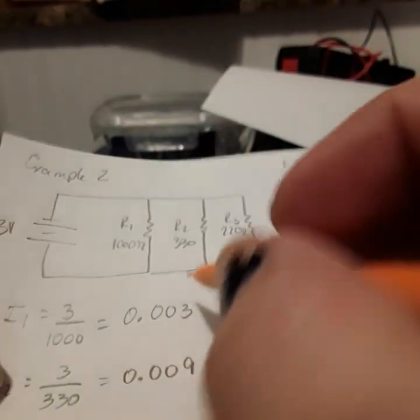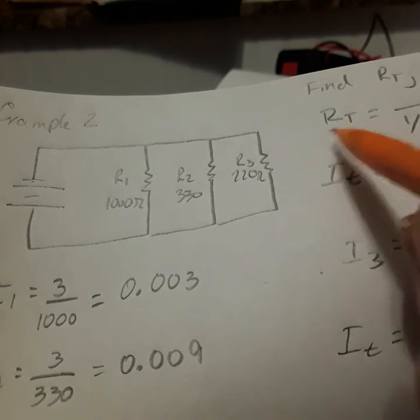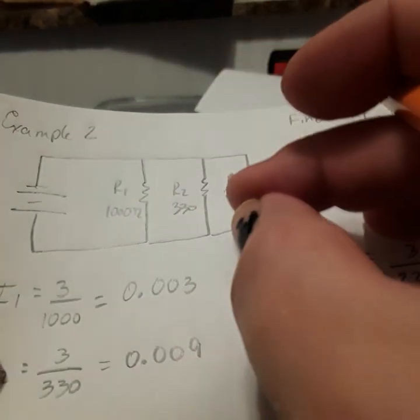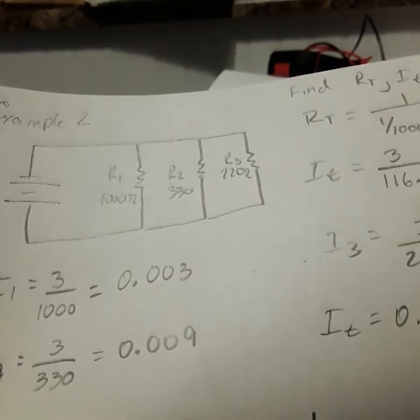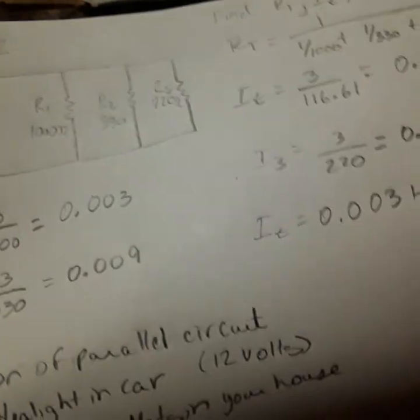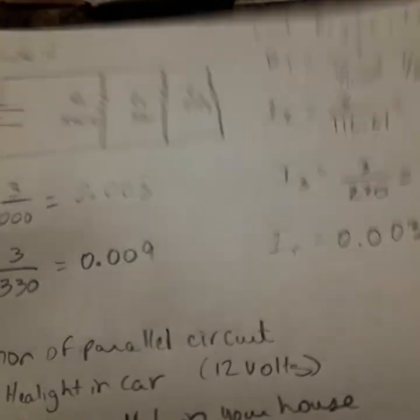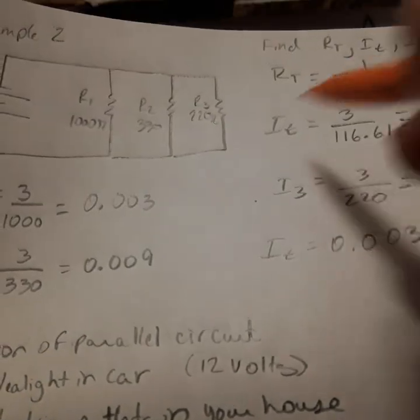Again, what we're doing is simplifying this. By finding the total resistance, we're reducing three branches into one equivalent resistor from the perspective of the voltage source, and that's how we get the information we need.